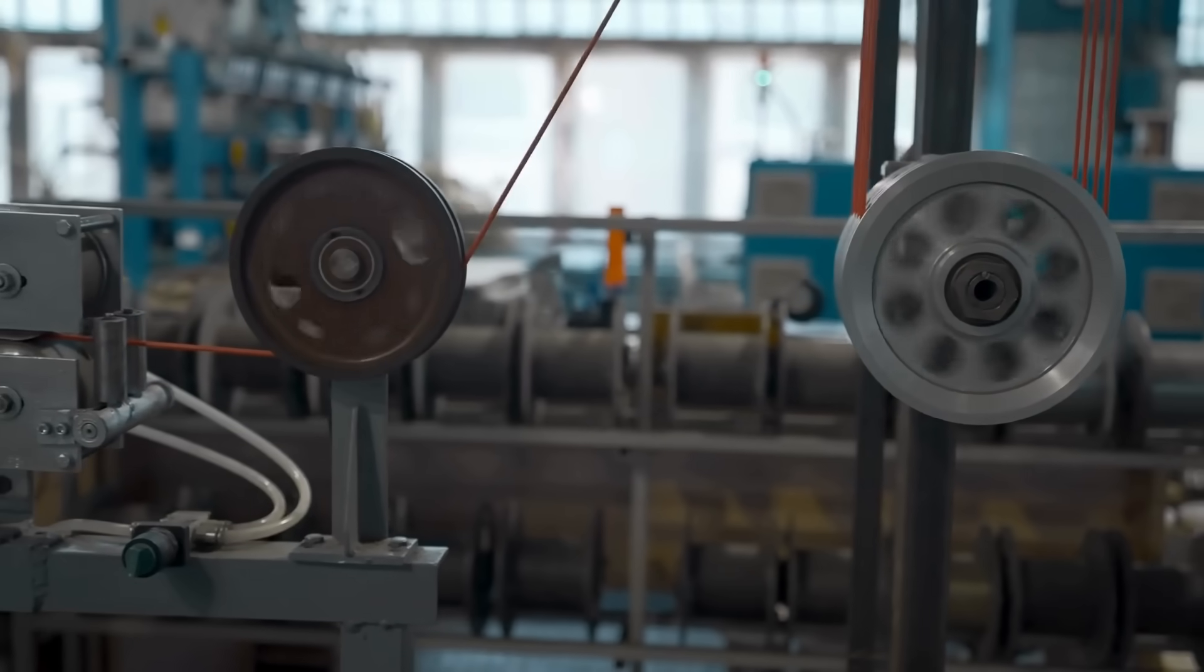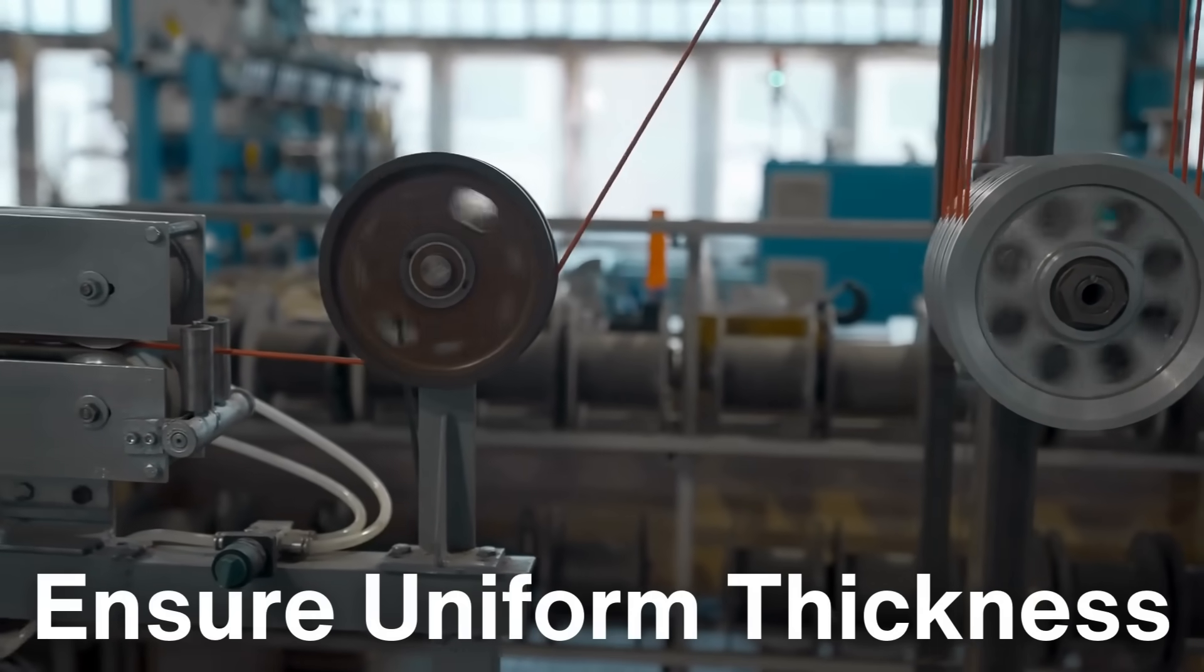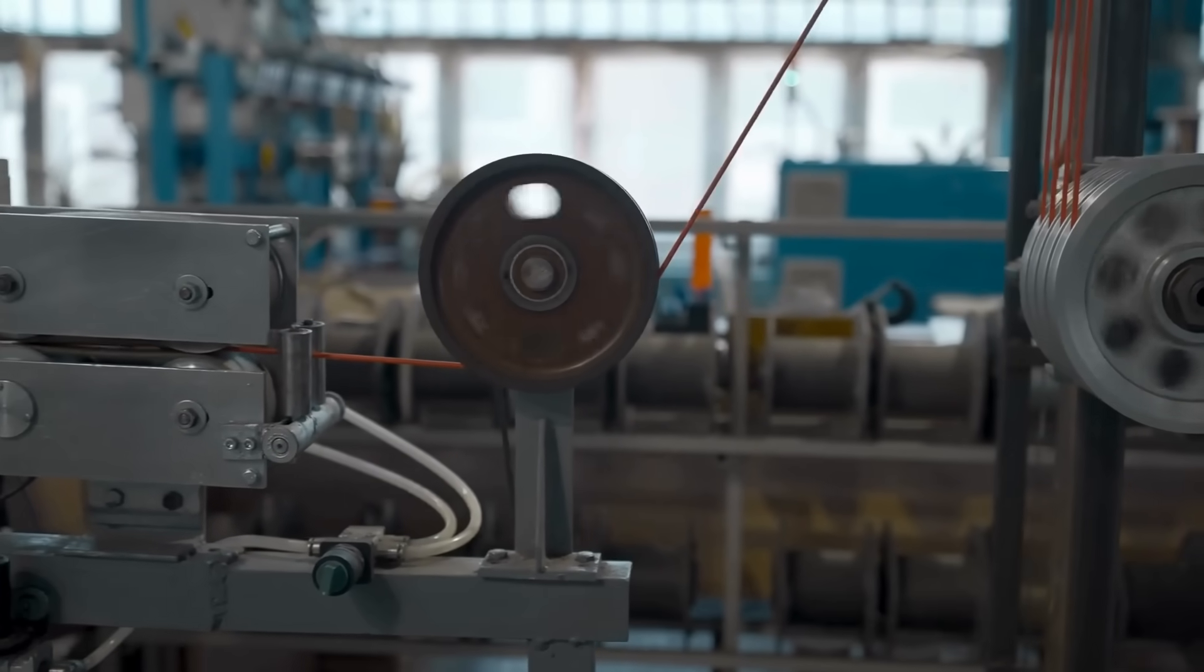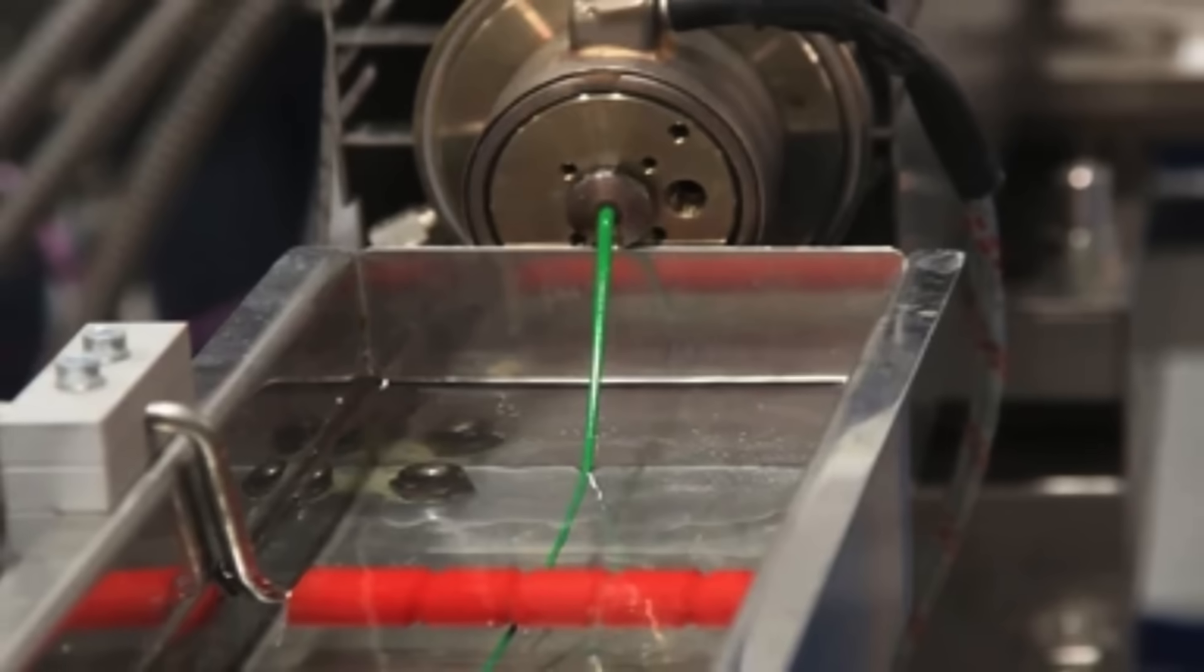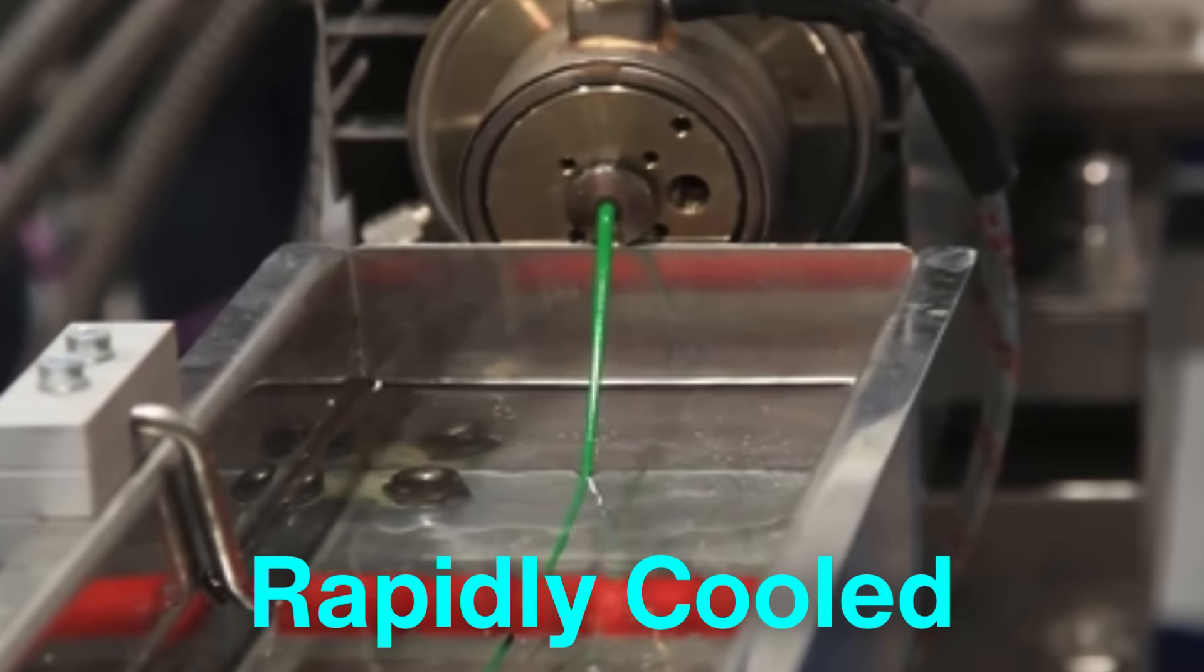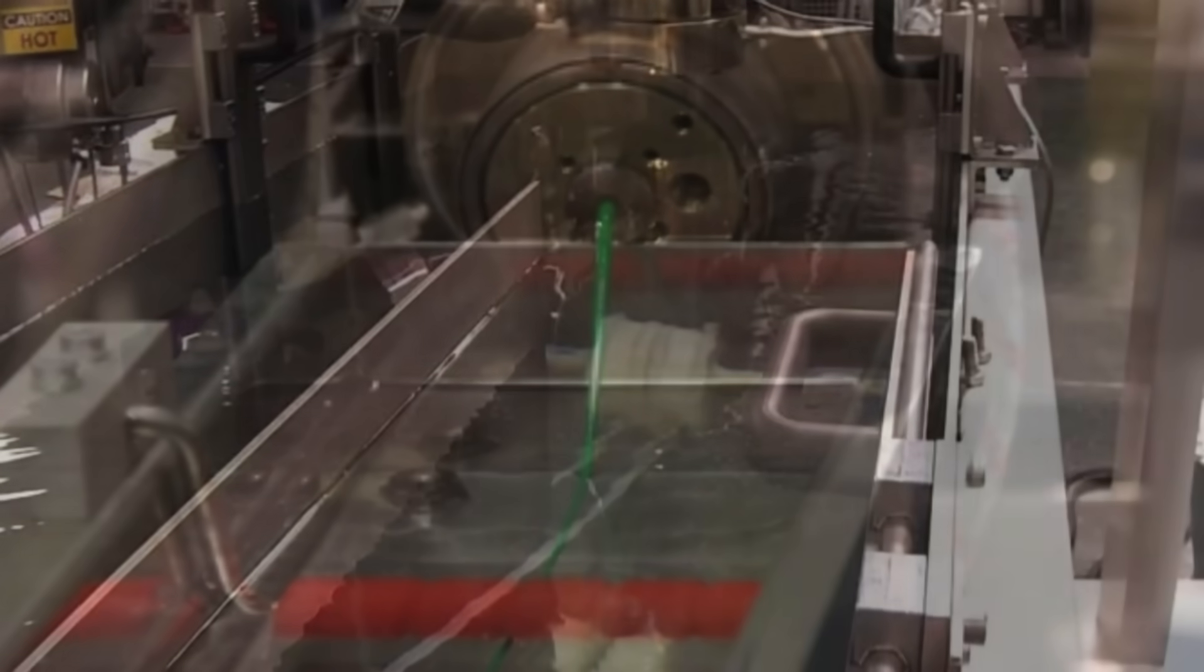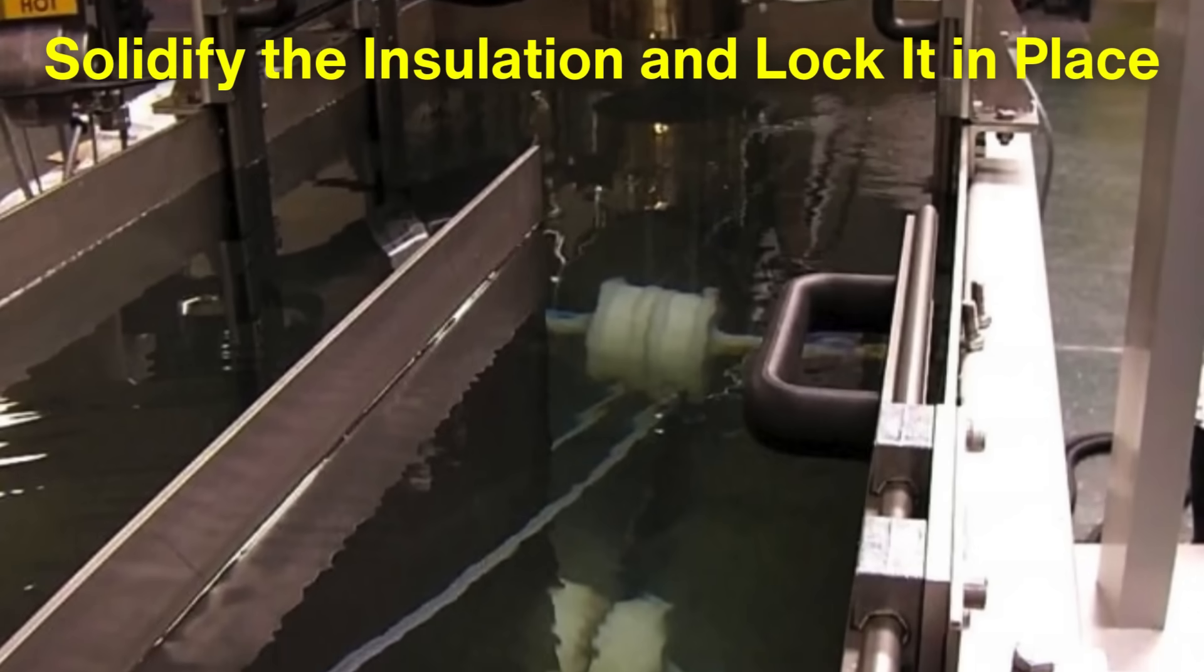This process must be incredibly precise to ensure uniform thickness, as even slight variations can compromise the wire's performance. The coated wire is then rapidly cooled, often in a water bath, to solidify the insulation and lock it in place.